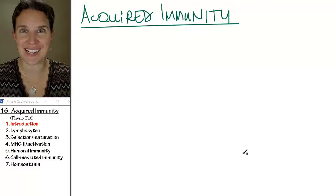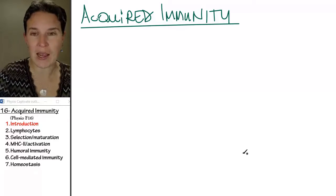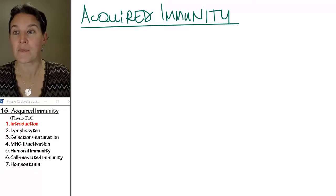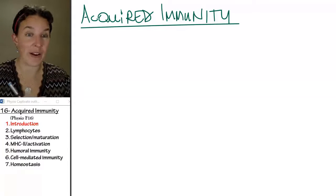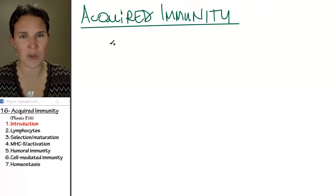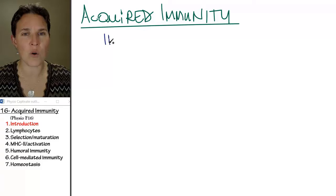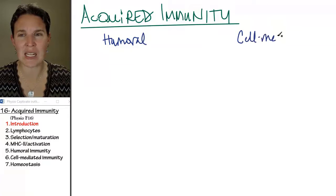All the other lymphocytes are involved in the acquired immune response. So we actually have two, just like we had two categories of immune system, acquired and innate, we have two categories of acquired immunity. We have the humoral immune response, and we have the cell mediated immune response.